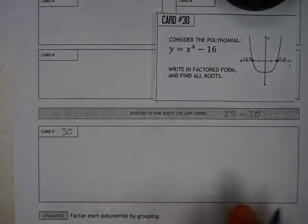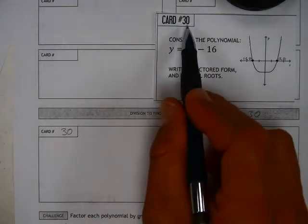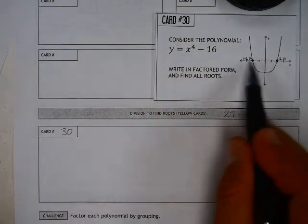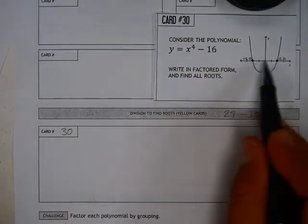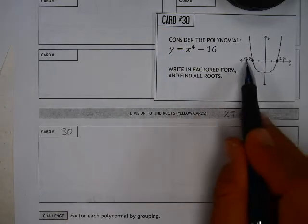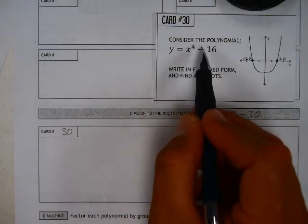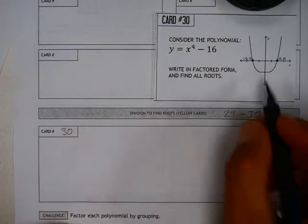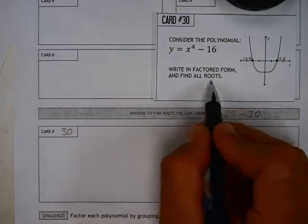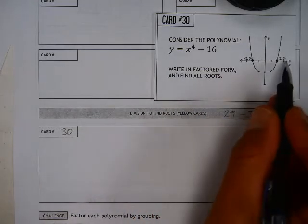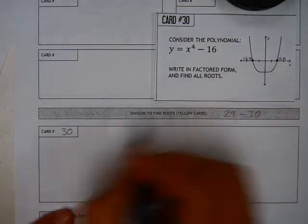Now, problem number 30 says to consider this polynomial, and we see that it has two roots. Those two roots are at negative 2 and positive 2, and it comes from this equation. Now, there's a number of different ways we can do this. We need to find all the roots. I already know that one root is negative 2, the other is positive 2. That's not going to be the hard part.